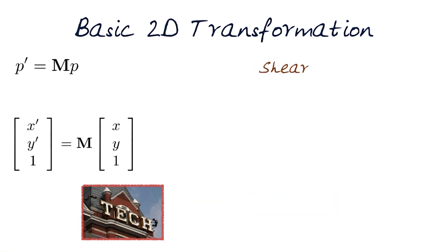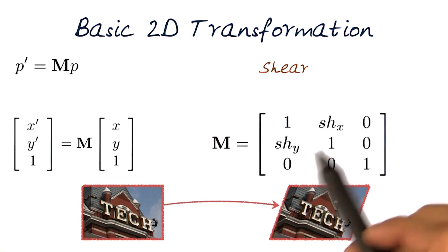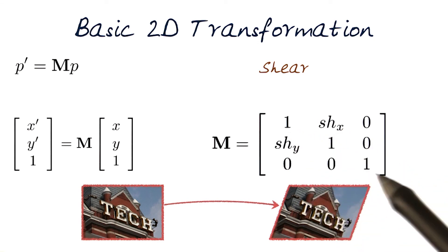We can also do shear the same way. Start with an image, we want to shear it. Remember, this was when shear happened like this. And of course, again, we would put the shears in the off diagonal terms, all the diagonals are ones. You can play around with this yourself in these matrix multiplies, and you'll see it works.